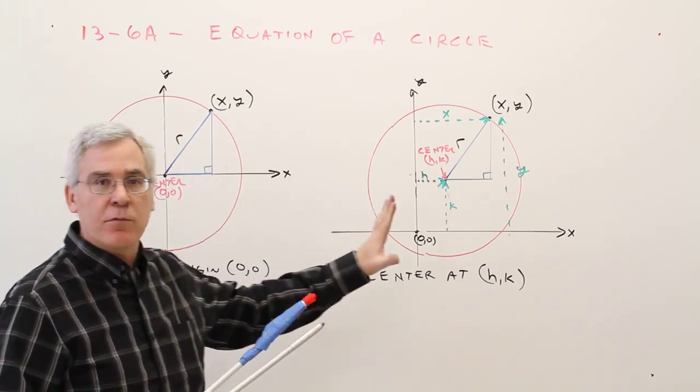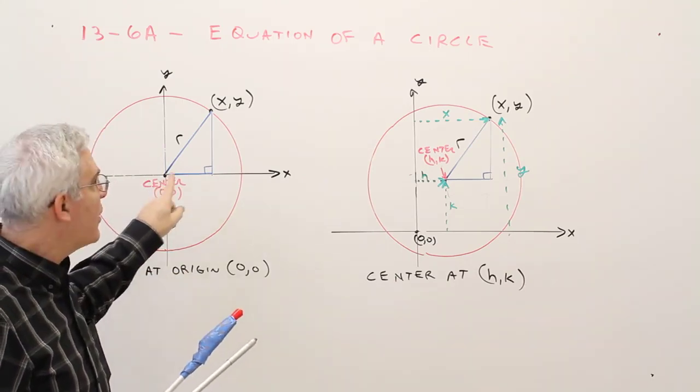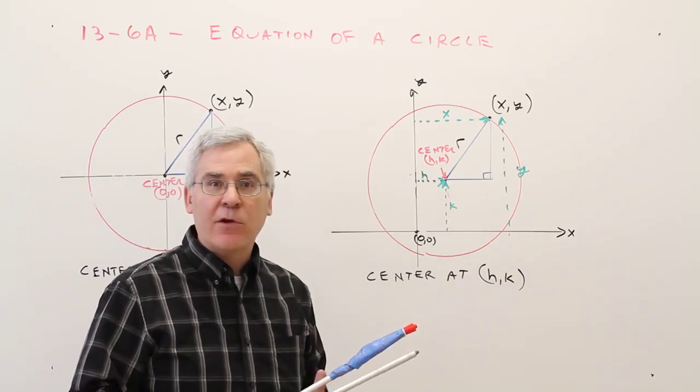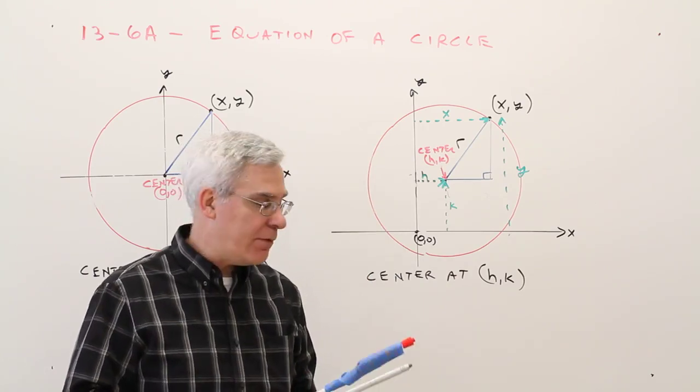There's two main conditions for a circle. One where the center is at the origin, and one where the center is not at the origin. I'll talk about the difference of these two circles.